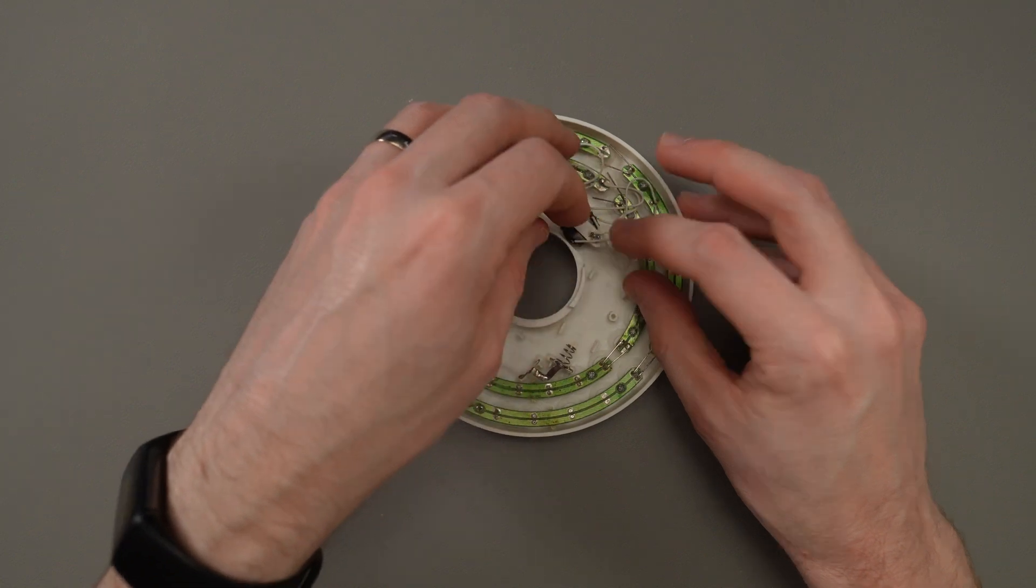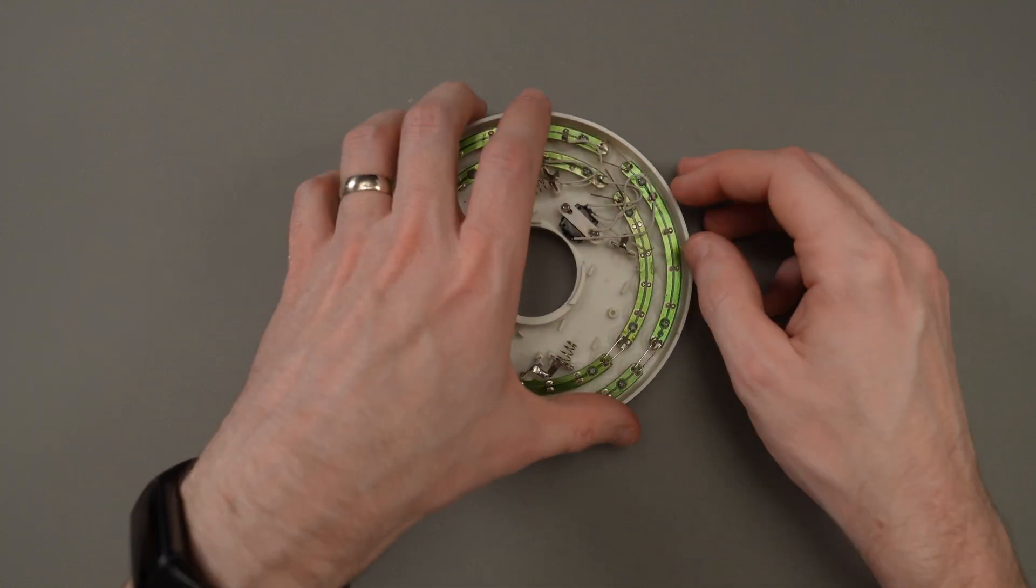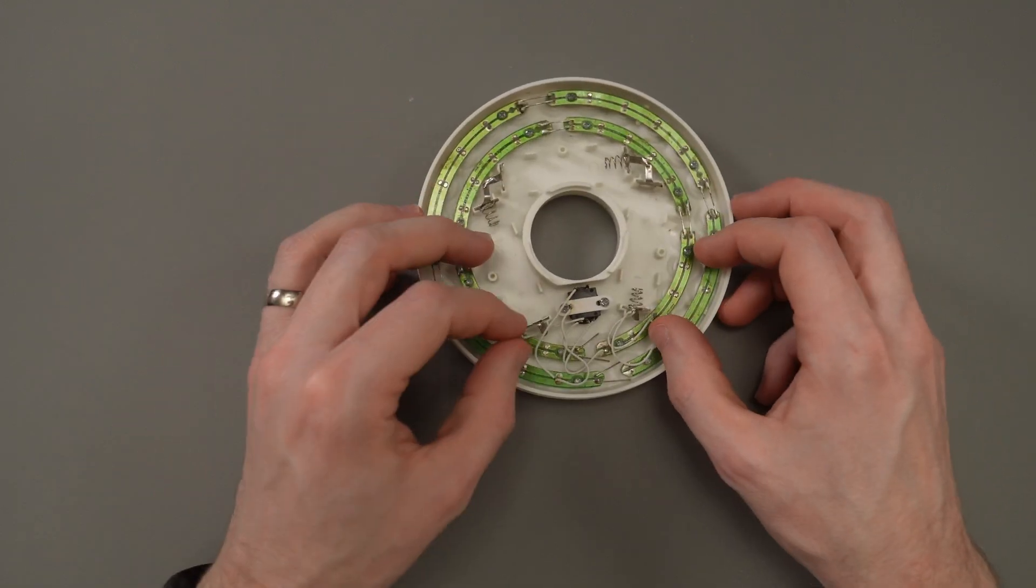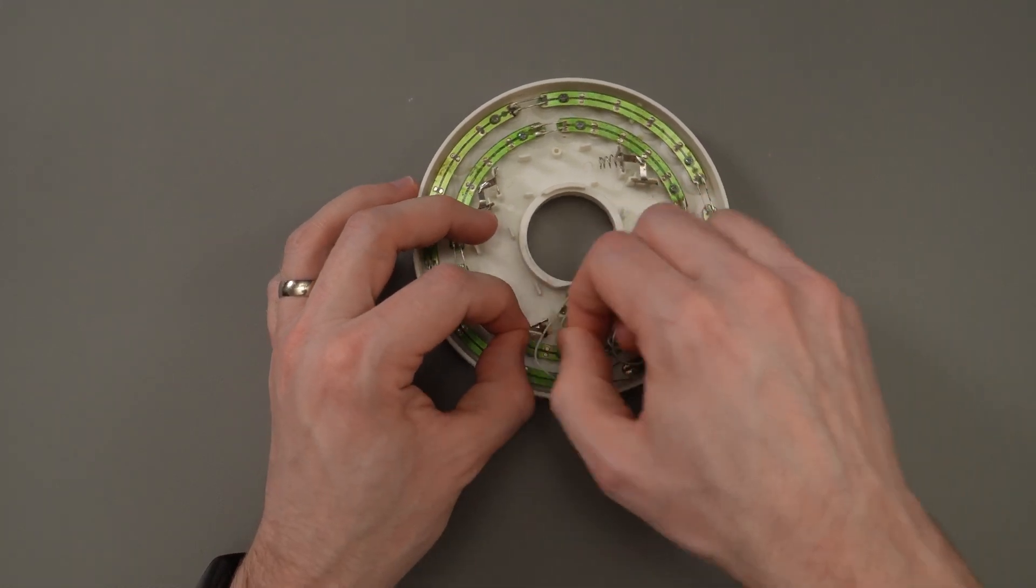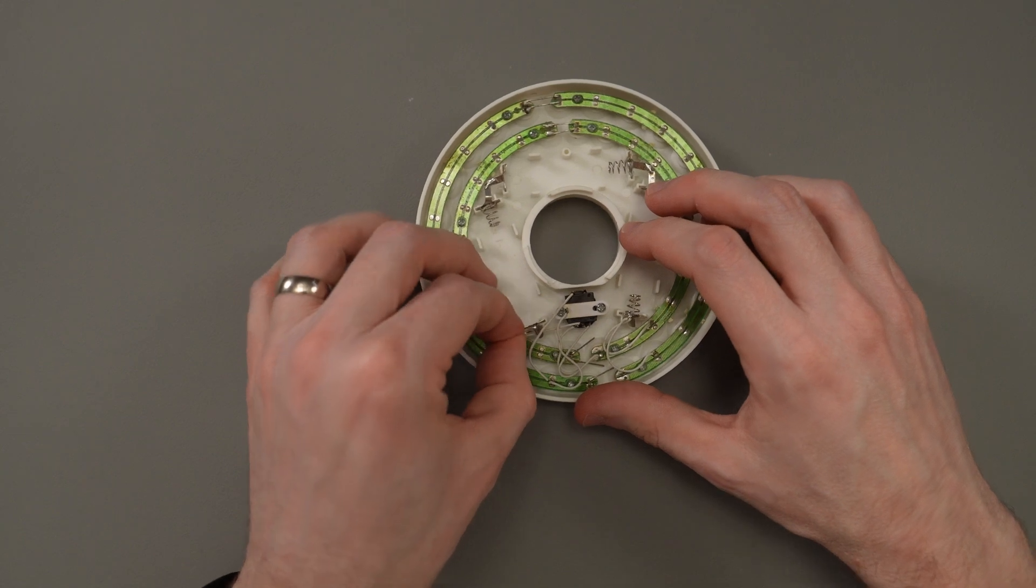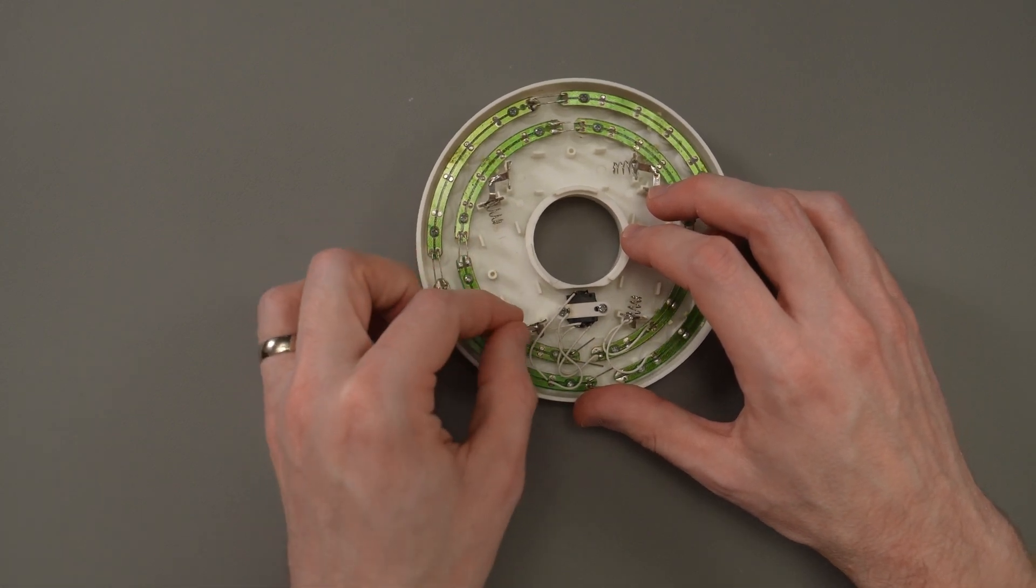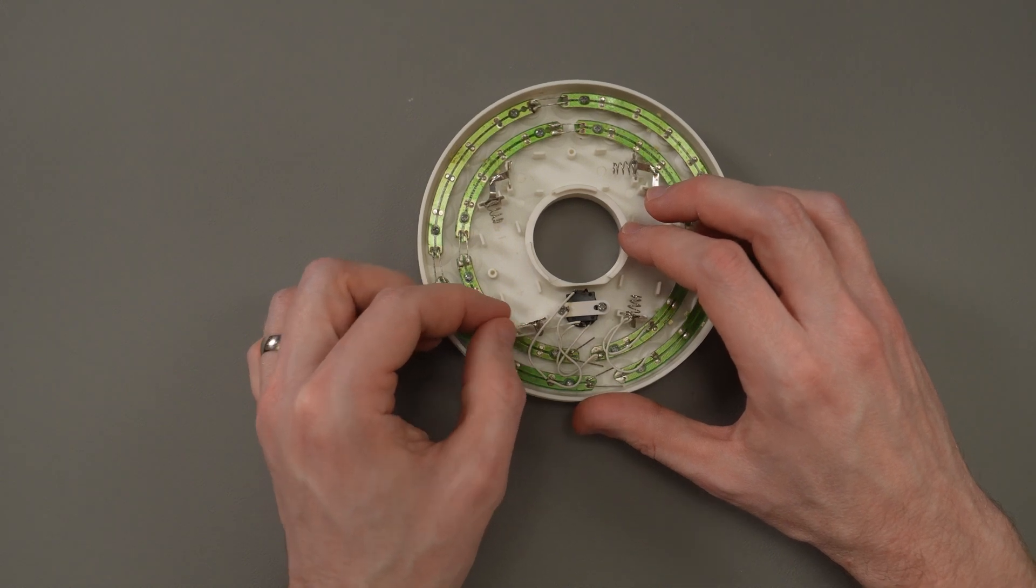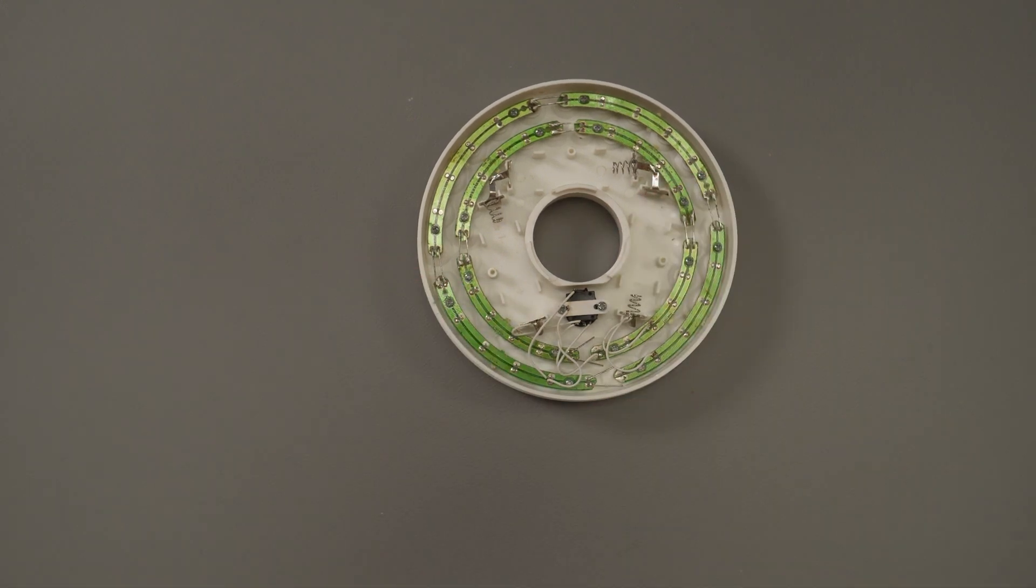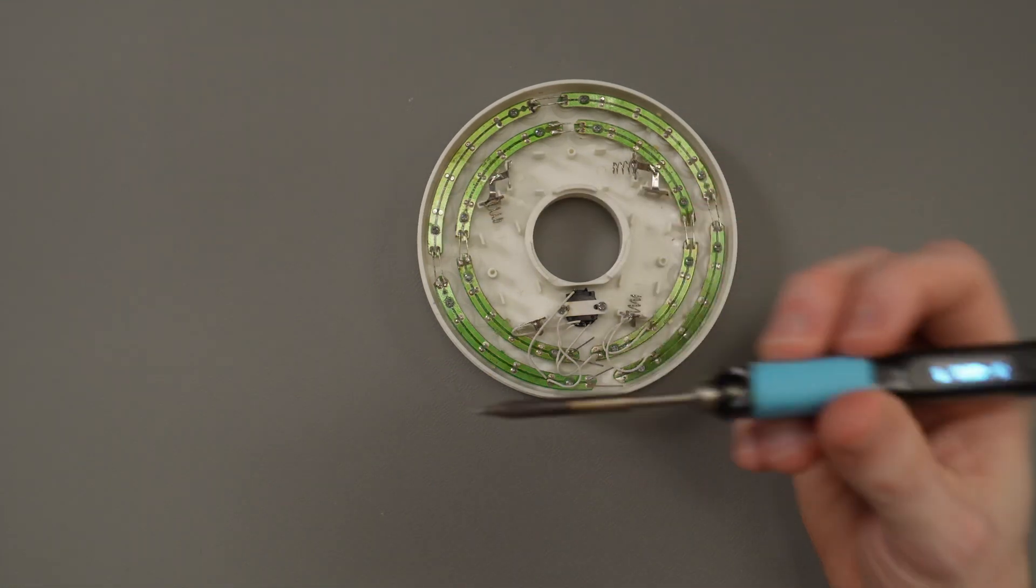And then what I'll do is, obviously we don't want it in front of the battery terminal. That's not very useful. Turn this around just so it's facing me. Pop this back. We'll just kind of wedge it in there like that. This isn't advanced electronics or anything. It's just a little LED light.